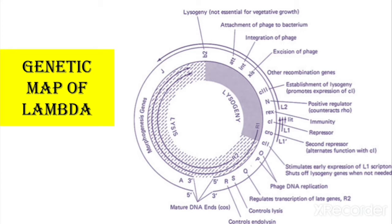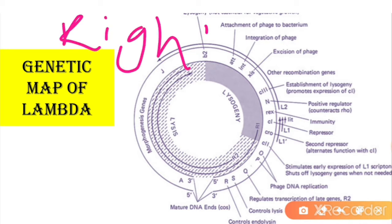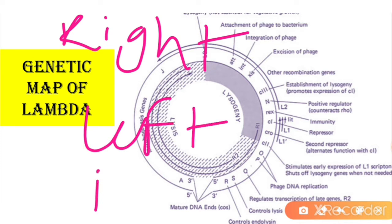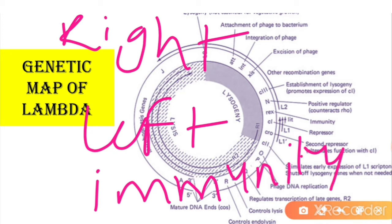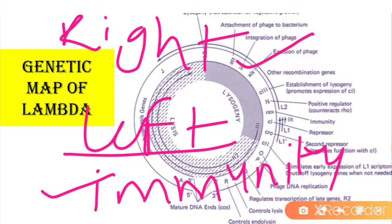The genetic map of lambda phage is divided into three main parts: the right operon, the left operon, and the immunity operon. The right operon controls vegetative functions — DNA replication, head synthesis, tail synthesis, and lysis of the bacterial cell. The left operon is involved in integration and recombination. The immunity operon mainly involves interaction with the DNA that determines whether the phage enters the lytic cycle or the lysogenic cycle.